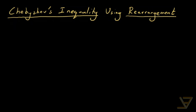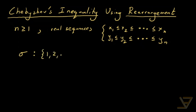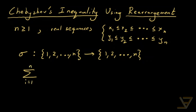What the rearrangement inequality states is that if n is a positive integer and we have two real number sequences — x1 ≤ x2 ≤ ... ≤ xn and y1 ≤ y2 ≤ ... ≤ yn — and if we have a bijection or permutation from {1, 2, ..., n} mapping to the same set {1, 2, ..., n}, then we have the following sequence of inequalities. We have the sum from i=1 to n of xi·yi, where the xi's and yi's match up according to their order.